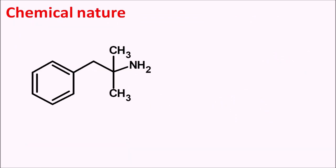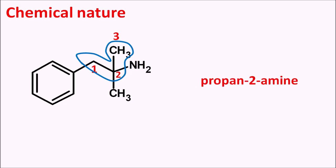Now let us look at the chemical nature of Phentermine. In the structure, we can clearly observe a tertiary amine group. Selecting the longest chain — which is three carbons — and numbering it, the amine group is present at the second position. This chain is a propyl chain, so the suffix of the name is 'propan-2-amine.' At the first carbon, a phenyl group is present, and at the second carbon, a methyl group is present. So '1-phenyl-2-methylpropan-2-amine' is Phentermine.